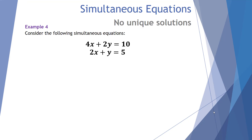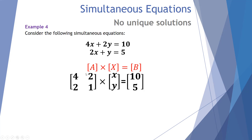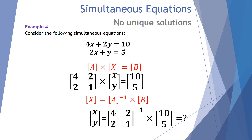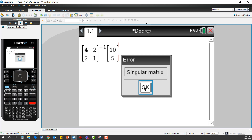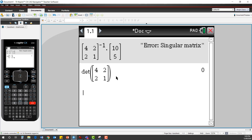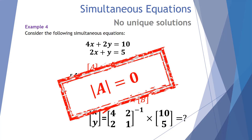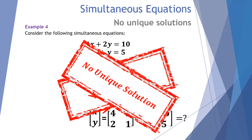Example four. Consider 4X plus 2Y equals 10 and 2X plus Y equals 5. We set up our coefficient matrix [4, 2, 2, 1], unknown matrix, and result matrix. We try to calculate the unknown matrix by multiplying the inverse of A by matrix B. On the TI-Inspire CAS, we take the inverse of the 2×2 matrix [4, 2, 2, 1] and multiply it by the 2×1 matrix [10, 5]. Again, we get the message 'singular matrix'. The determinant of this matrix is 0, which is why we have the error. You cannot find an inverse matrix when the determinant is zero.